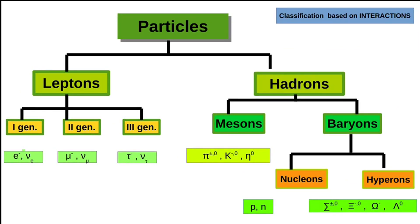Now let us divide particles based on their interactions — this is the most elegant way of classifying them. The broad categories are leptons and hadrons. This division is based on strong interactions: leptons do not feel the strong interaction, while hadrons are the ones which do feel the strong interaction.